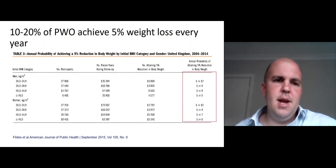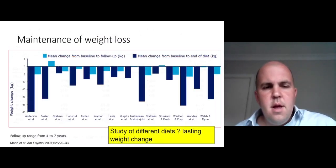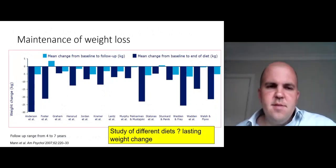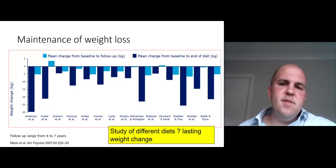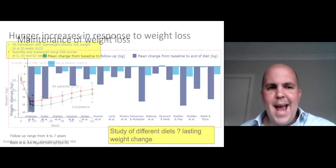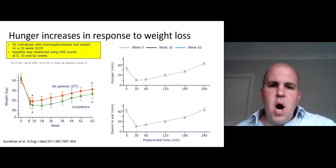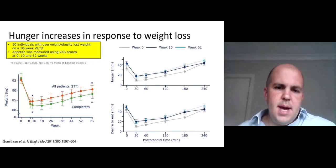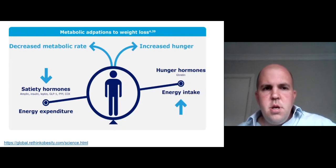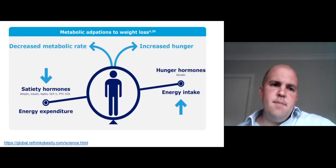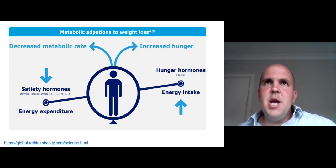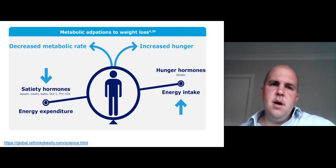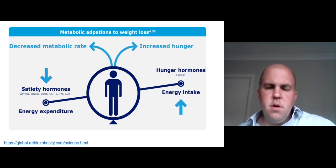Lots of people are able to achieve a clinically significant amount of weight loss. However, when people lose weight — as shown in this print diet study — there is significant weight regain. When we lose weight, we become more hungry with a greater desire to eat, our total energy expenditure falls, and our fullness or satiety hormones fall whilst our hunger hormones increase. This biology is really an adaptation to maintain our weight at the point before we lost it.